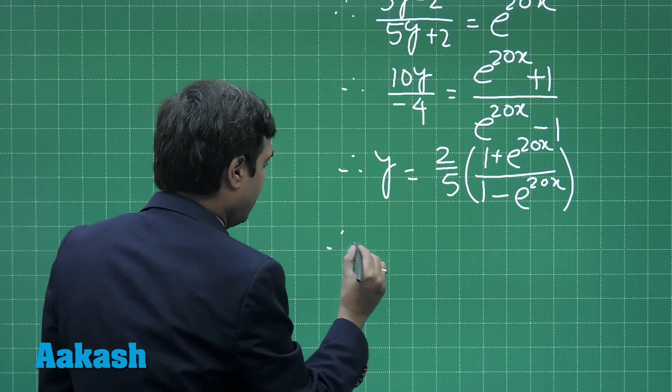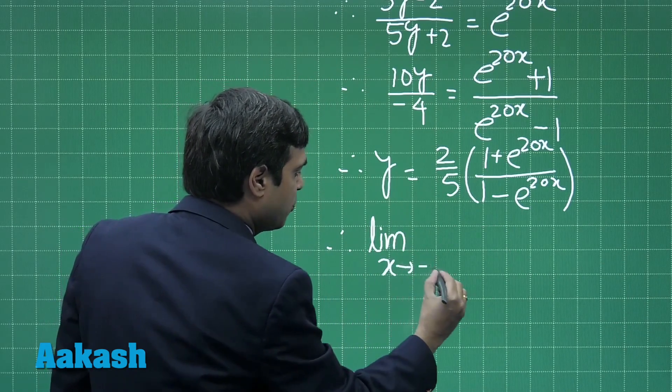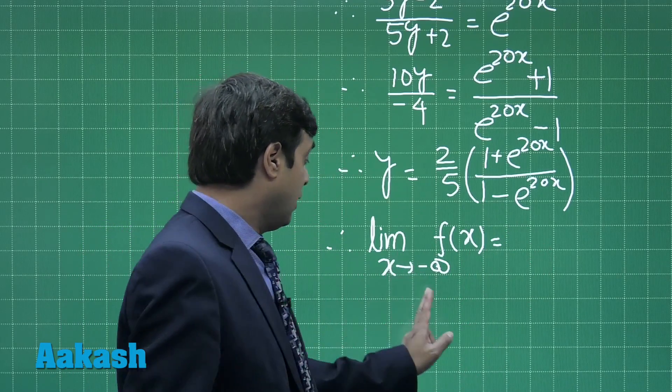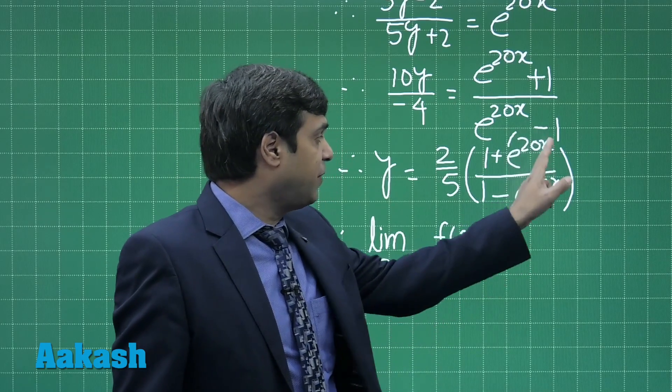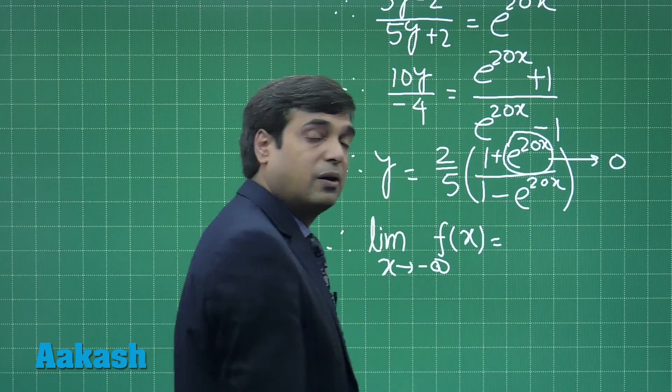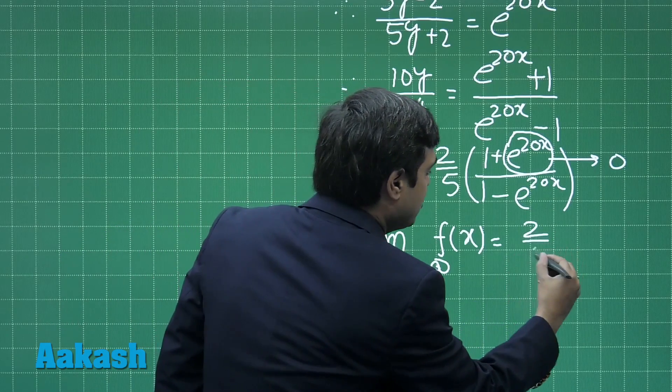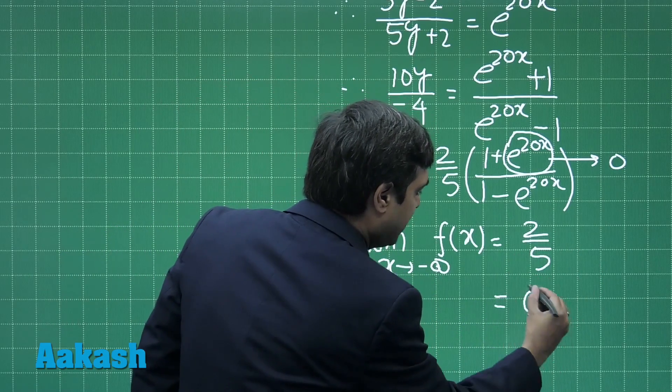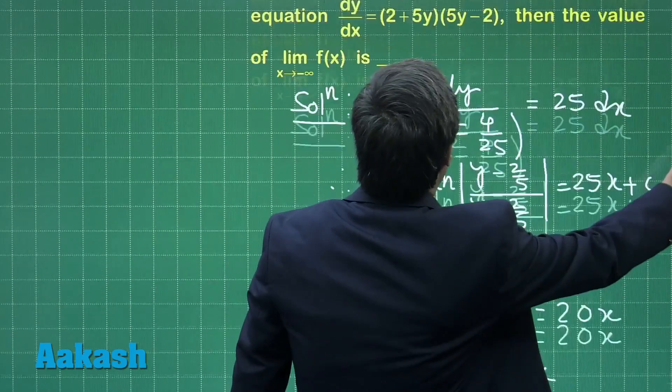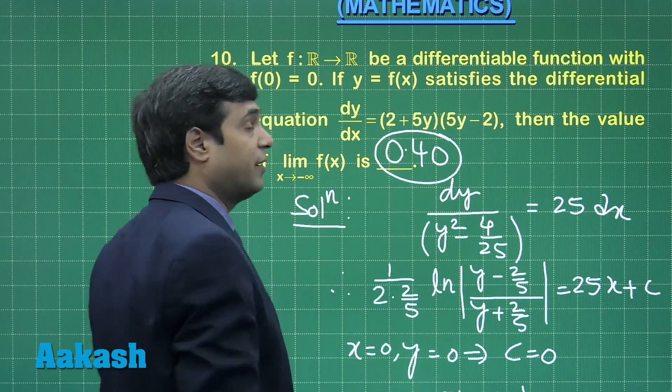The question is asking for limit x approaching to minus infinity f(x). When x is approaching to minus infinity, this e^(20x) term goes to 0. Similarly in the denominator this term is approaching to 0. We are getting the result as 2/5 or 0.40. Hence, the result is 0.40 for this question.